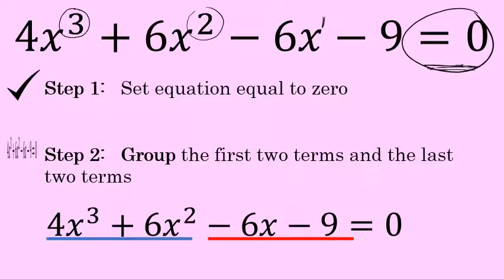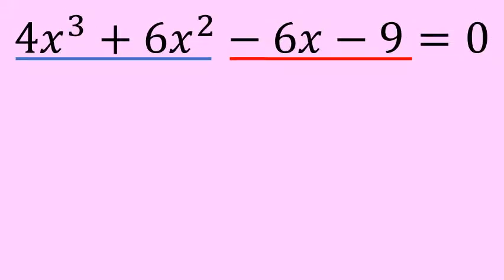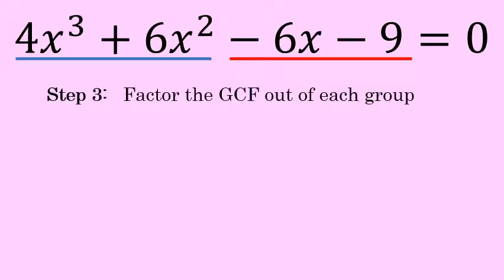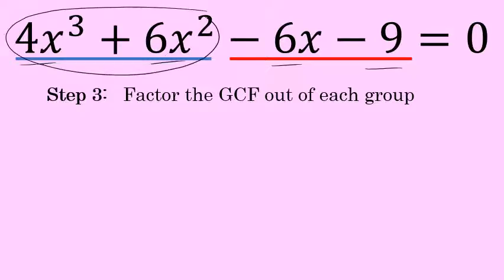Once that's done, it's on to step 3, which is to factor the greatest common factor out of each group. The four terms do not have a common factor — 4, 6, 6, and 9 are not all divisible by the same number, and all four terms do not include a factor of x. However, each group individually does have a greatest common factor. The first group, 4x to the third and 6x to the second, has a common factor of 2x squared — the GCF of 4 and 6 is 2, and the GCF of x to the third and x to the second is x squared.